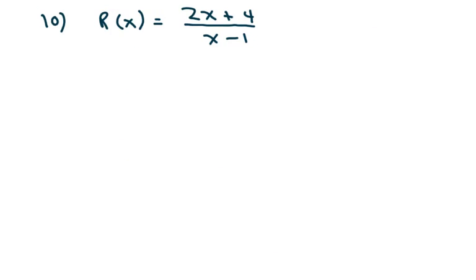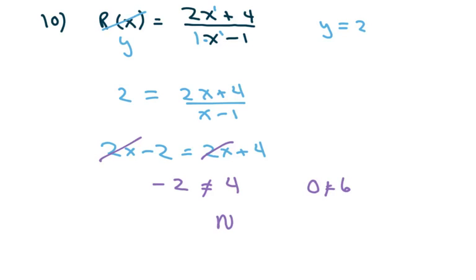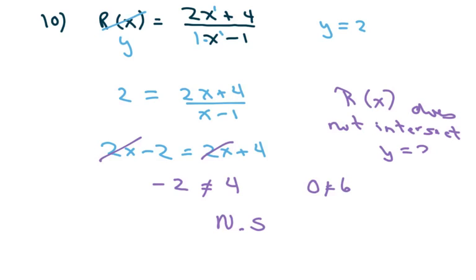The next one is very similar. The degrees are the same, so you divide the lead coefficients, giving Y equals 2. Set 2 equal to your equation and cross multiply. You get 2X minus 2 equals 2X plus 4. The 2X terms cancel and you get 0 equals 6, which has no solution. Therefore, R of X does not intersect the horizontal asymptote Y equals 2.